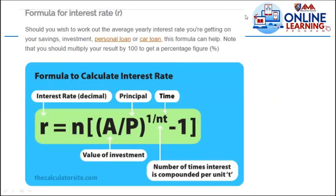Next, formula for interest rate. Should you wish to work out the average yearly interest rate you're getting on your savings, investment, personal loan, or car loan, this formula can help. Note that you should multiply your results by 100 to get a percentage figure. So formula to calculate interest rate: r equals n multiplied by A divided by P raised to 1 over n times t minus 1.